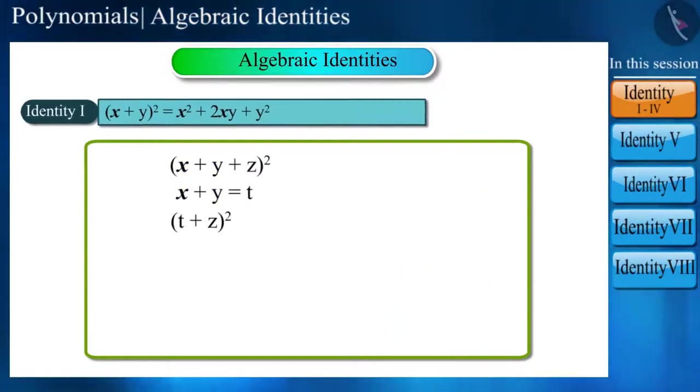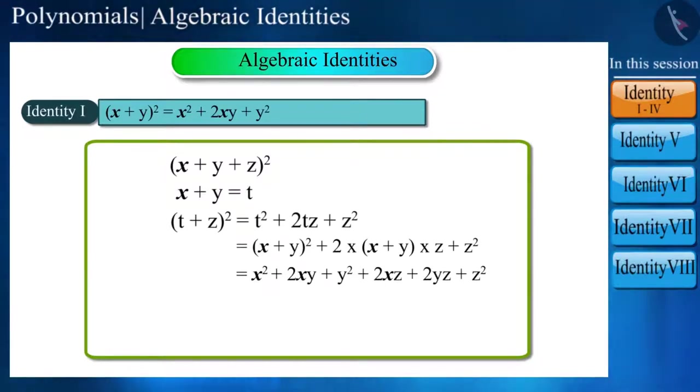Now, we can use identity 1. And now, keep the value of t. Then, you will get this: x plus y plus z the whole square is equal to x square plus y square plus z square plus 2xy plus 2yz plus 2xz.